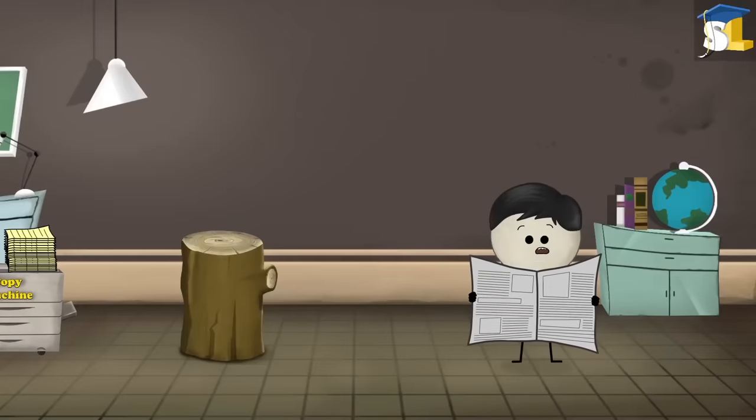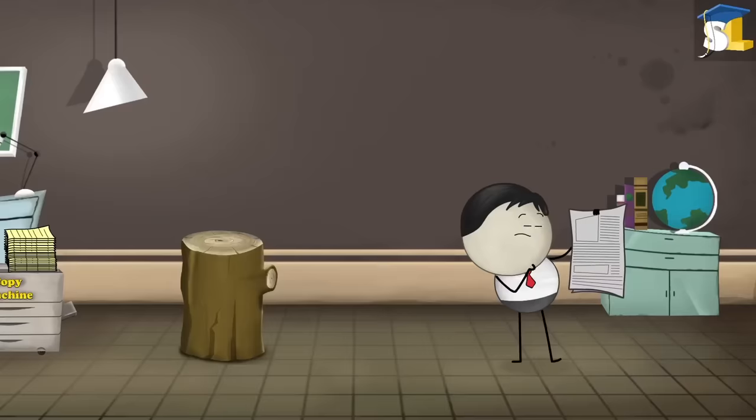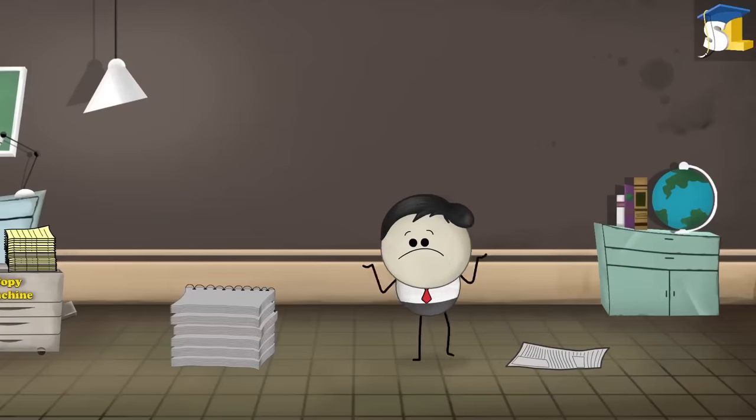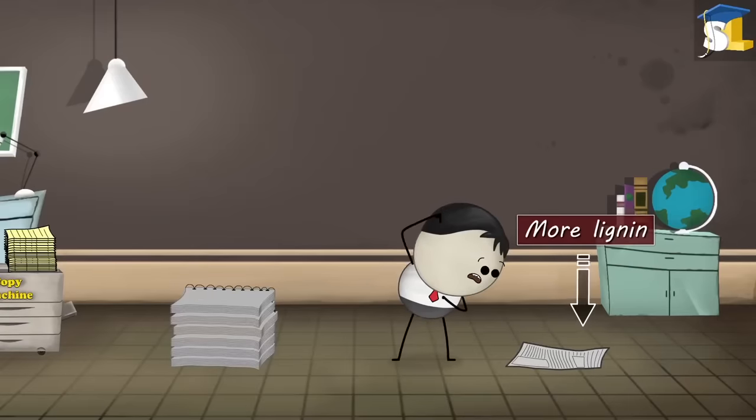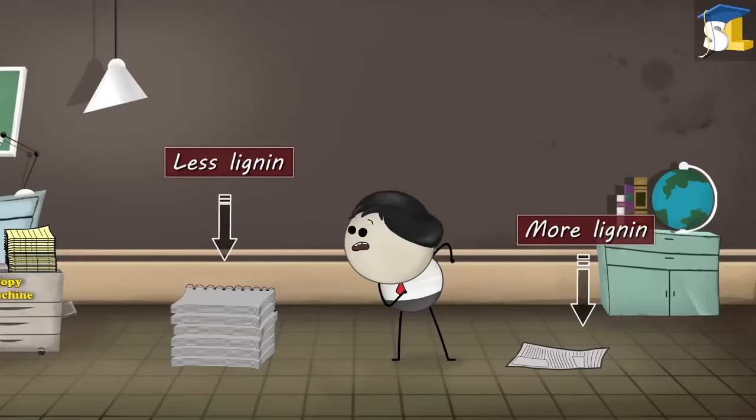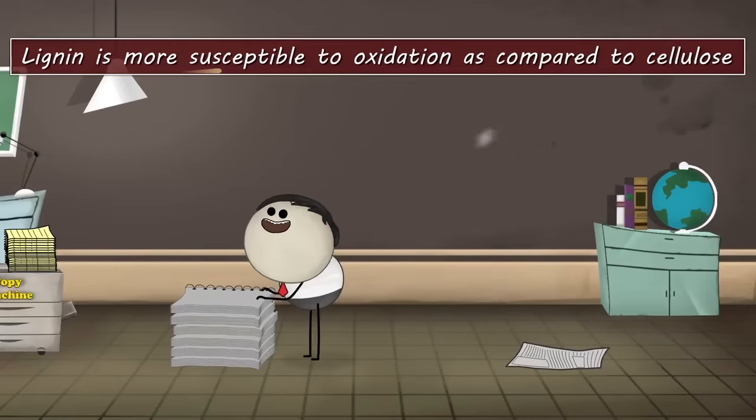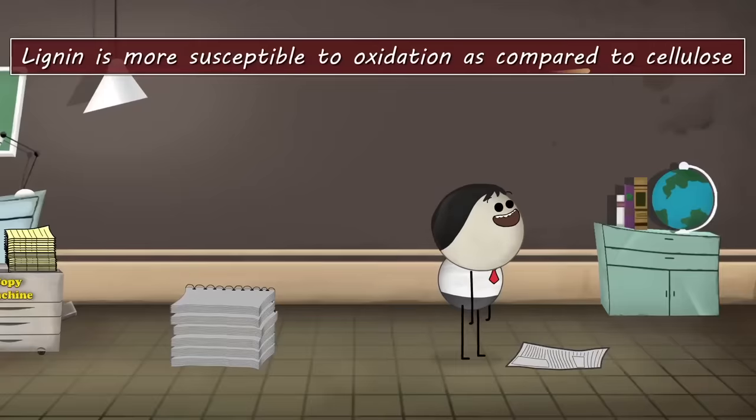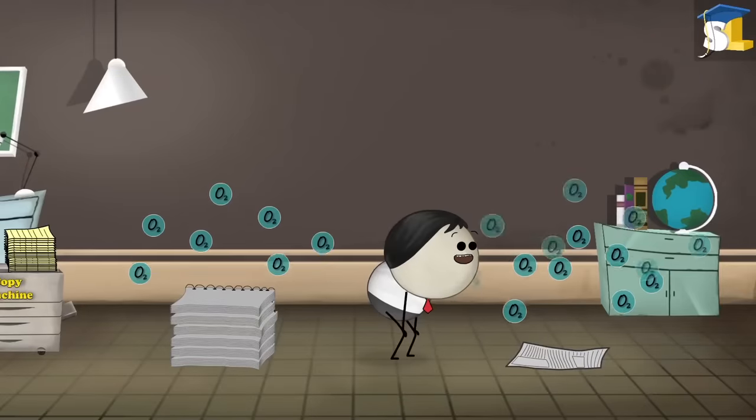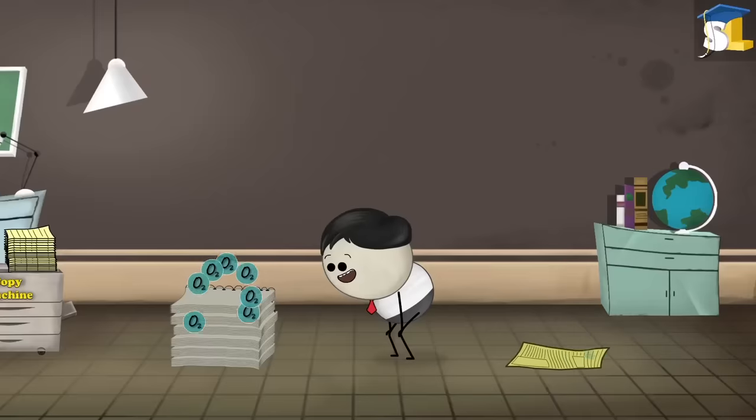But did you know that newspapers turn yellow relatively quickly as compared to books? This is because there is more lignin in newspapers than in papers made for books. Lignin is more susceptible to oxidation as compared to cellulose. Hence, newspapers turn yellow faster than papers of books.